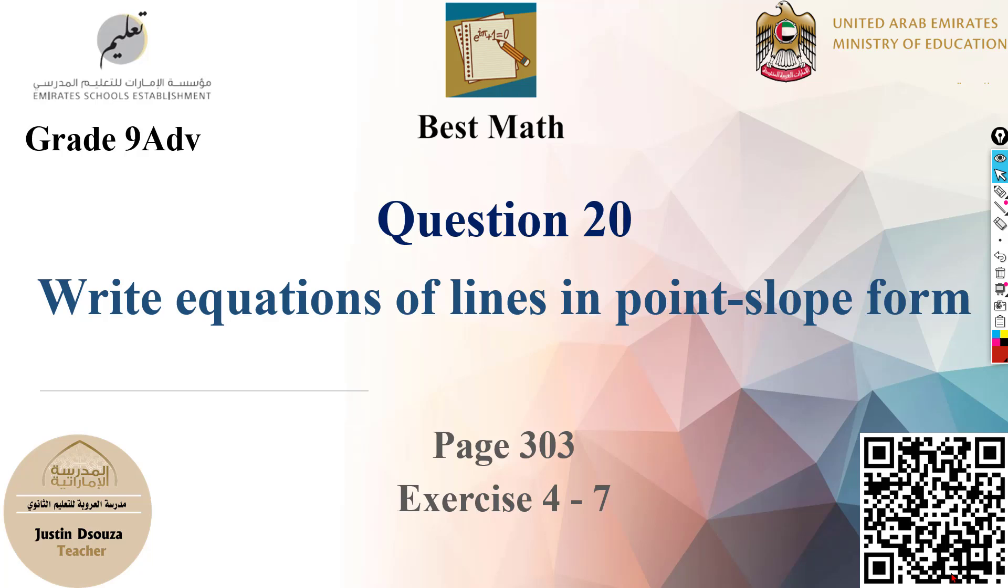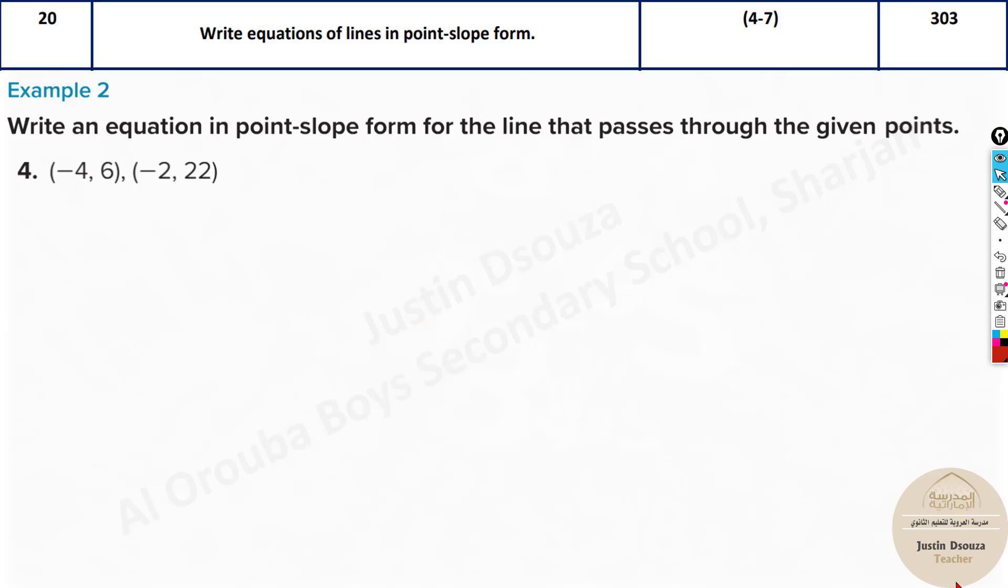Question number 20 is the last but one question in the writing part. This is about writing equations of lines in point-slope form. This is very easy because there are only two steps and you must do those two steps. Over here they are specified it's point-slope form, you can't use slope-intercept form or anything.